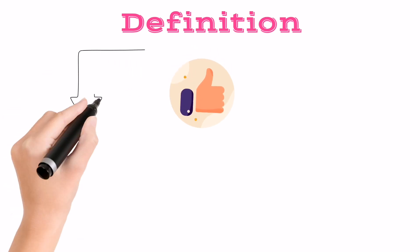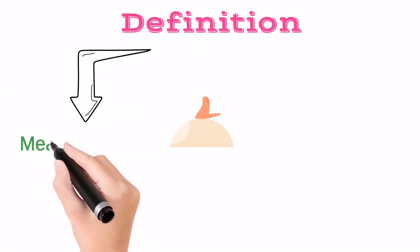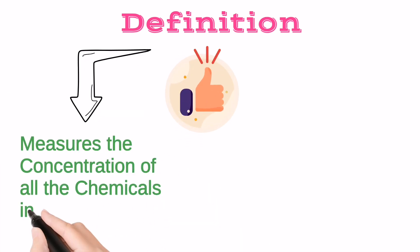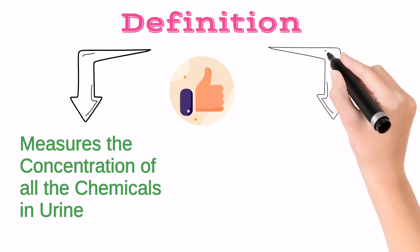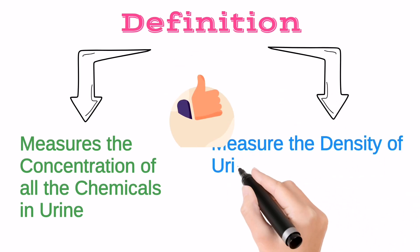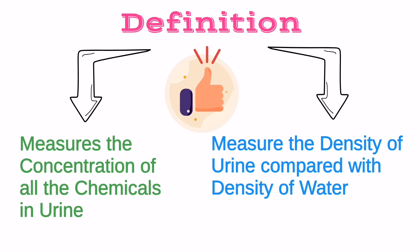First, what is Urine Specific Gravity Test? It's a medical lab test which shows the concentration of all the chemical particles present in urine, and also measures the density of urine compared with the density of water.